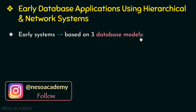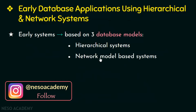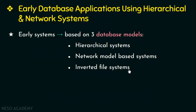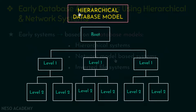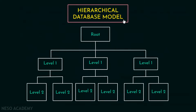These early database systems were based on three database models: the hierarchical database model, the network model-based systems, and the inverted file systems. They were mainly based on the hierarchical model and the network model. A hierarchical database model is a data model where data is organized into a tree-like structure starting from the root node.